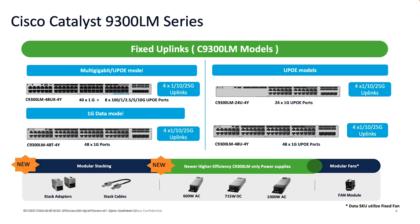All variants include fixed uplink options capable of 1x10G and 25G on the uplinks. Since these platforms differ significantly in depth compared to our 9300L family, we have designed a new set of stacking cables as well as a new set of higher efficiency AC and DC power supplies. If a use case requires a mix and match of AC and DC power supply, that is also something that can be leveraged on the 9300 LM family.